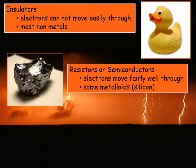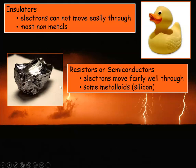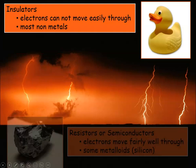Another category is resistors or semiconductors. You've probably heard about semiconductors in computers. Silicon, which is a metalloid, is used in this role — electrons move fairly well through it, but there's some resistance. We typically want some resistance in most circuits, so that's an example of a semiconductor or resistor.